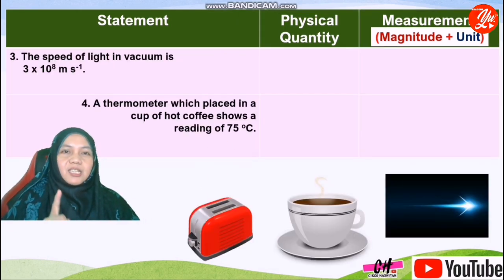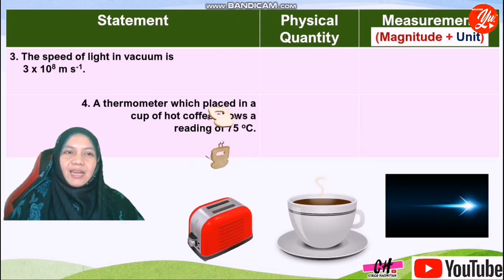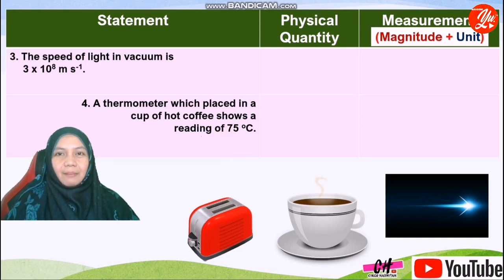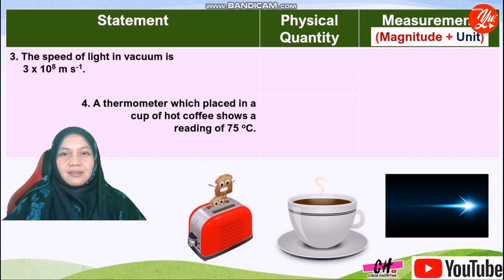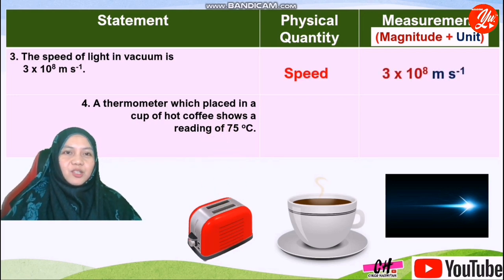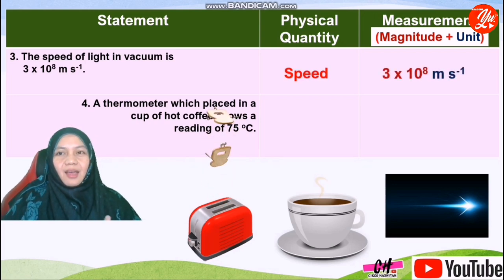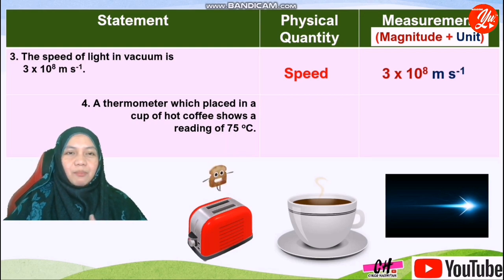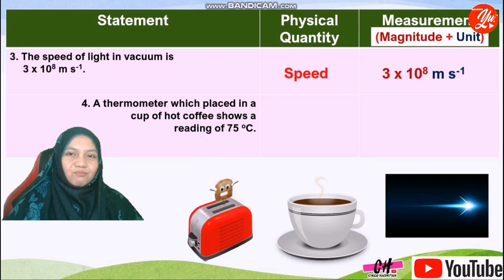Statement 3: The speed of light in a vacuum is 3 × 10⁸ metres per second. The physical quantity is speed, the magnitude is 3 × 10⁸, and the unit is metres per second.